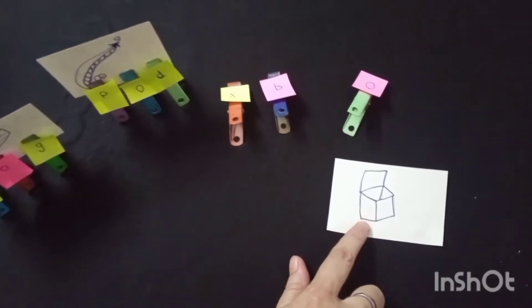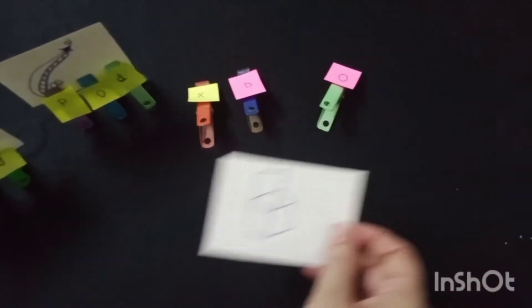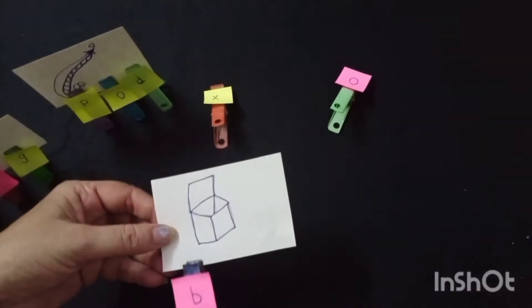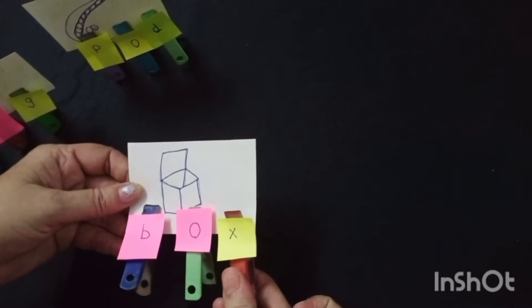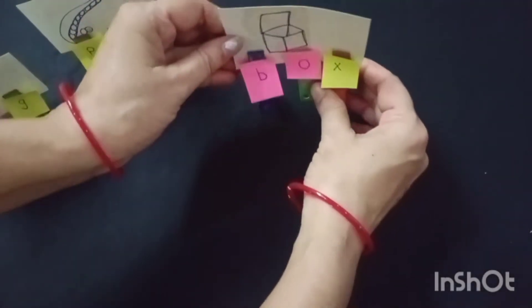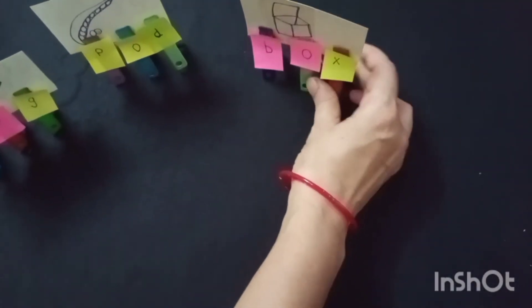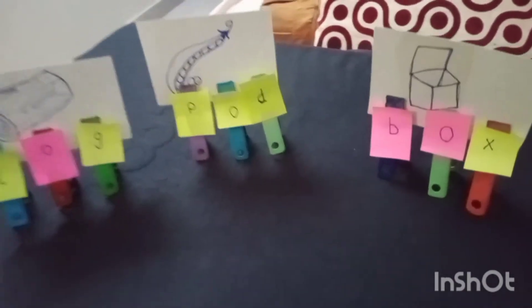Now this is the picture of a box. So let's make the spelling. B O X Box. Now student, see, our activity is ready.